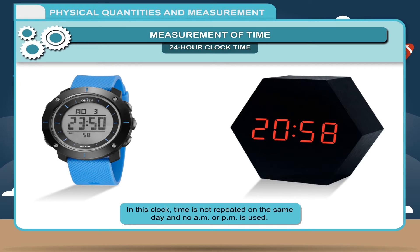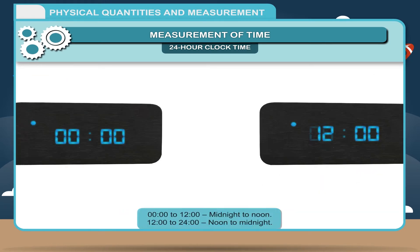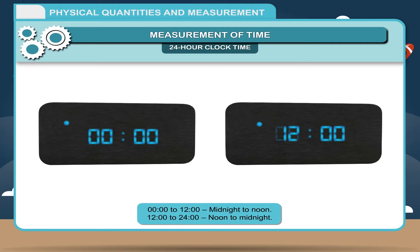The time schedule is as follows. 0000 to 12 is midnight to noon. 12 to 24 is noon to midnight. 0 hour 0 minutes denotes exactly midnight time. And 12 hour 0 minutes denotes exactly noon time.